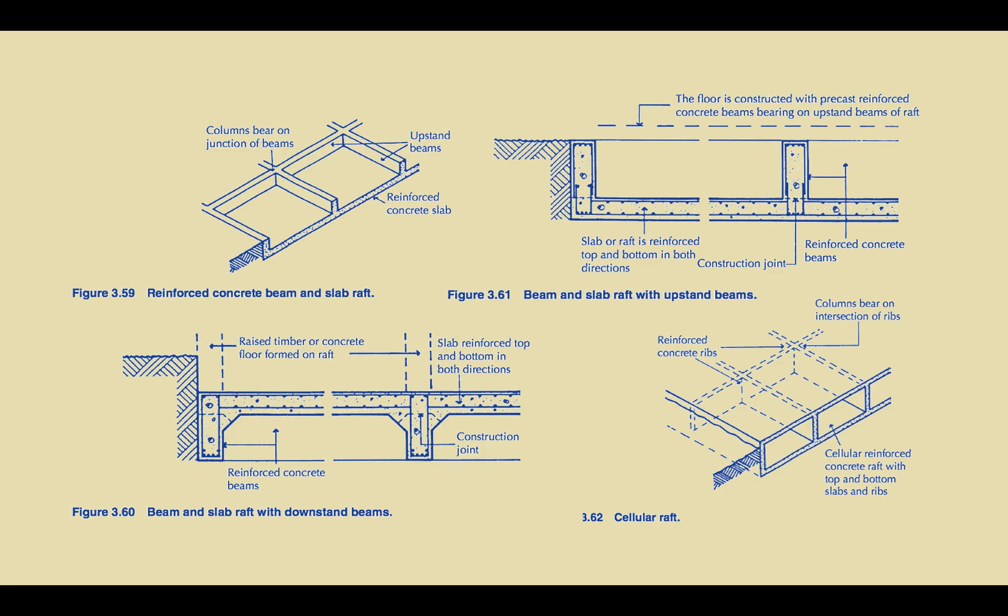These beams could be facing downwards or as upstand beams and that would change the detail for the foundation itself. In other cases, a cellular raft foundation or a buoyant raft will actually create a cavity between similar beams and slabs on either end.